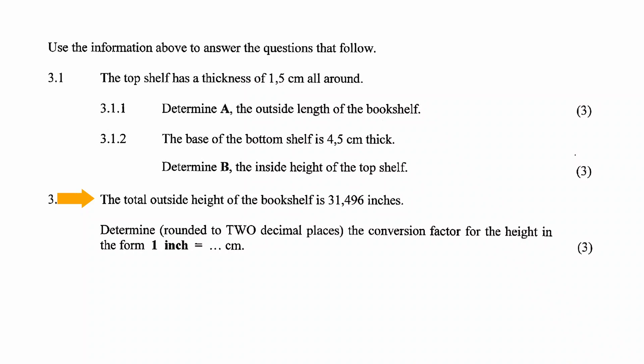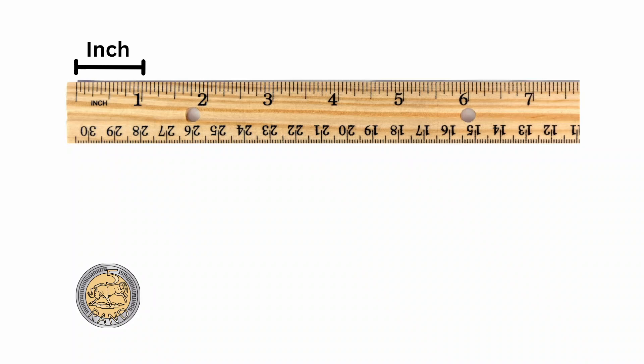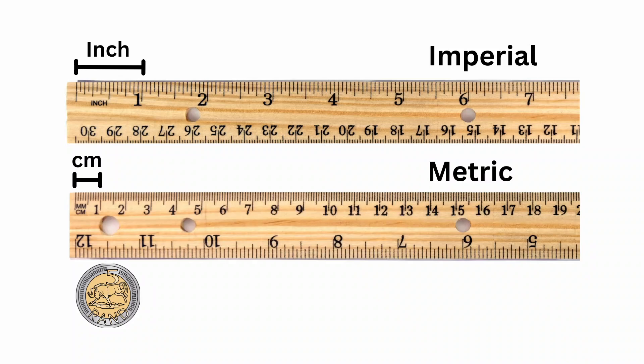In question 3.2, it is stated that the total height of the bookshelf is 31.496 inches. We have to determine, rounded to two decimal places, the conversion factor for the height in the form of 1 inch equals a certain number of centimeters. Inches belong to the imperial system of measurement, used in a few countries — the USA being the biggest. In most other countries, including South Africa, we use the metric system. Inches and centimeters both measure length, but they belong to different systems and are not equal.